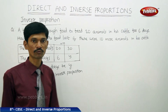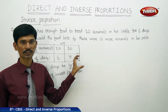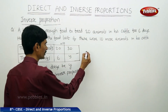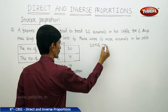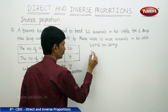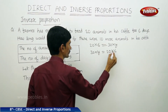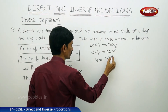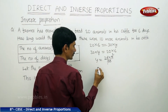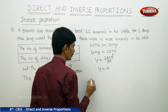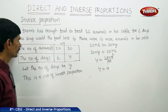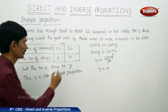When two quantities are in inverse proportion, the product of the first and second quantity remains constant. So 20 into 6 equals 30 into y, meaning y equals 20 into 6 divided by 30. Cancelling the zeros: 3 ones are 3, 3 twos are 6, so y equals 2 twos are 4. The number of days is 4, meaning he can feed the food for 30 animals for 4 days.